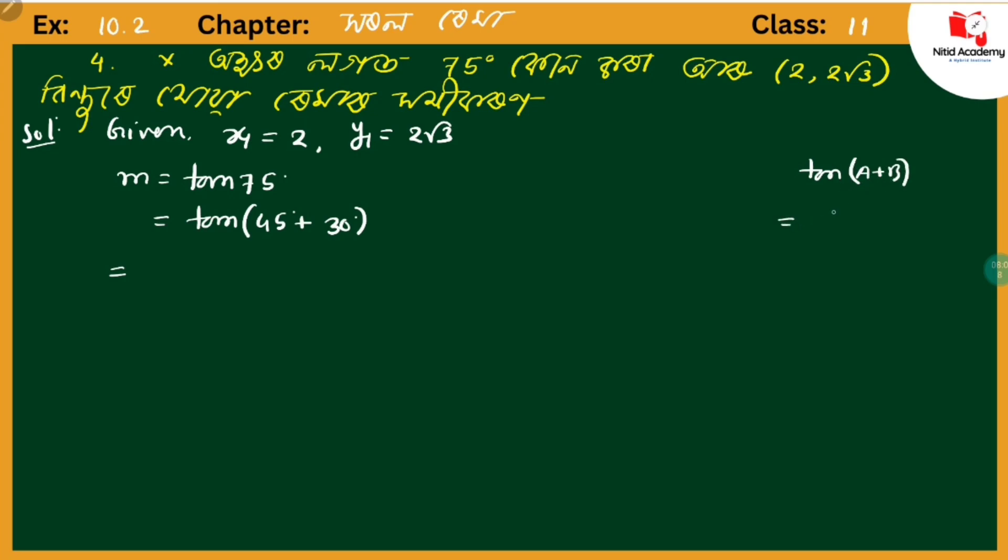The formula is: tan(a + b) equals (tan a + tan b) divided by (1 - tan a tan b). So here, tan 45 + tan 30 over 1 - tan 45 tan 30. tan 45 is 1 and tan 30 is 1/√3.